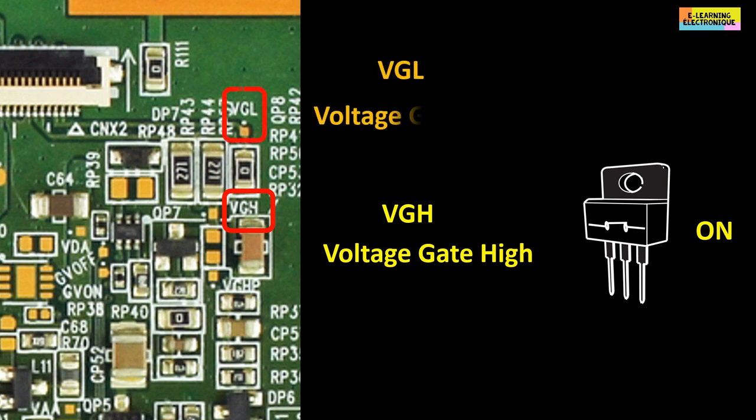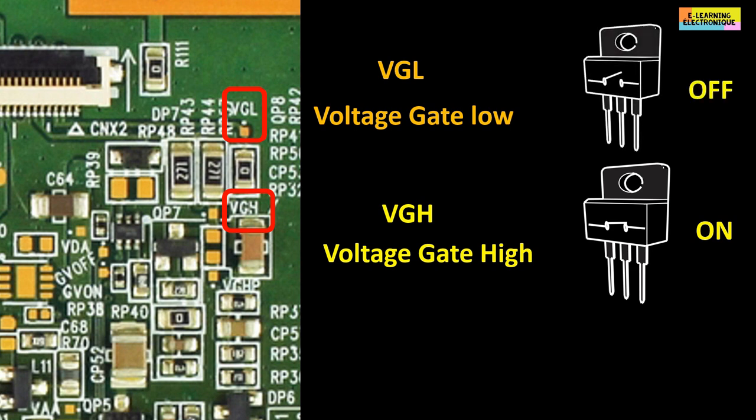The VGL is the acronym for voltage gate low. This voltage puts the transistor in open or off mode.